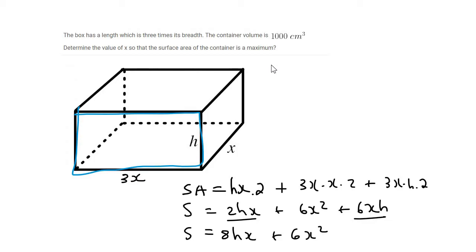The problem that we should see is that there are two variables. There's an h and there's an x. So we would need to replace one of those by using other information that will be given. And so here they tell us that the container volume is 1,000.